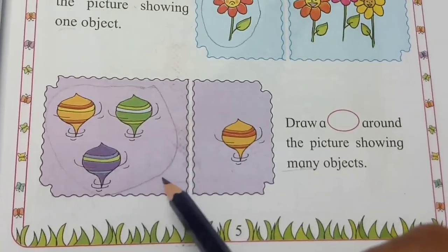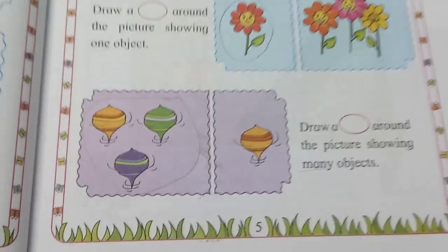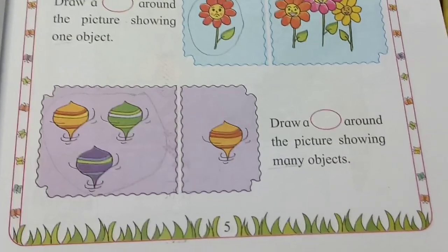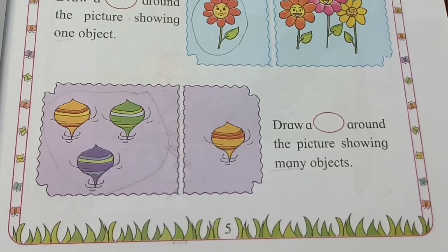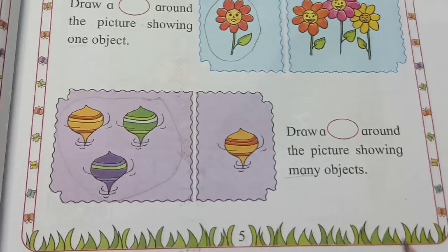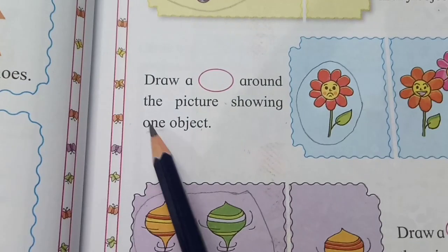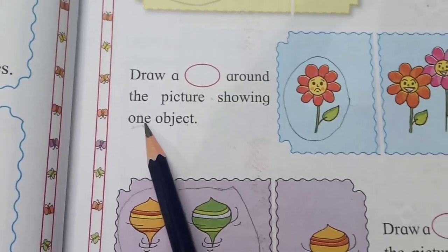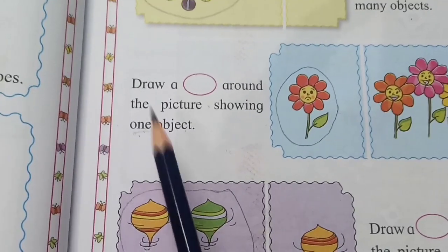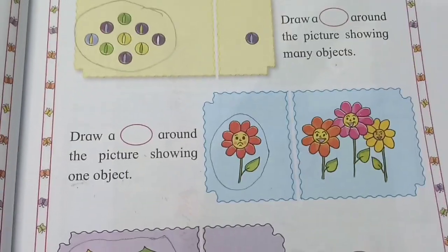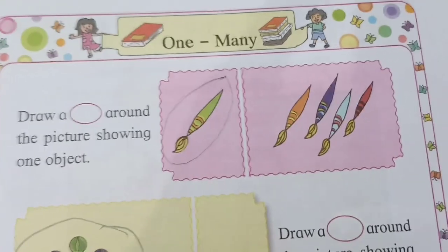This is what you have to solve. It will be a circle here — one circle there. Okay, good. This is complete.